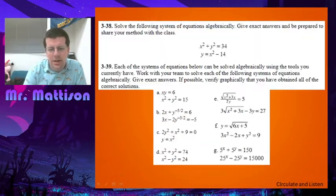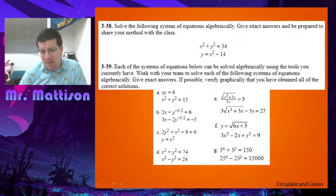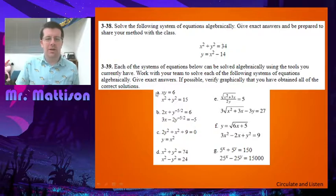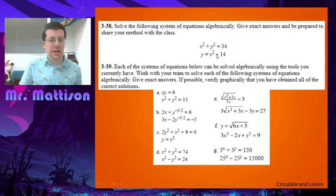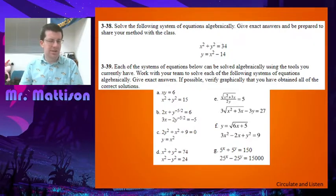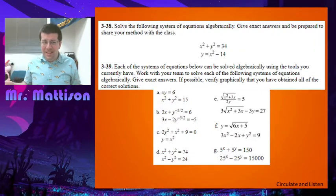Now let's take a look at number 38. We're going to solve this system algebraically, so pause and try it. There is a trick that makes this one a little easier. What you likely tried to do was take this x squared minus 14 and plug it into the y. That works fine — you then square that and get an x to the fourth, another x squared term, and a constant. Then you combine like terms and get a big quartic, which you could use a U substitution on. That'll work, but it's kind of nasty.